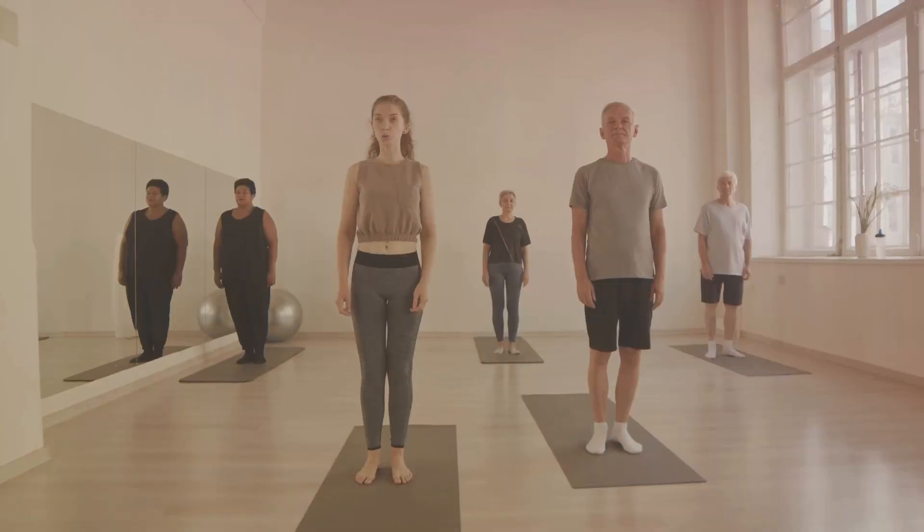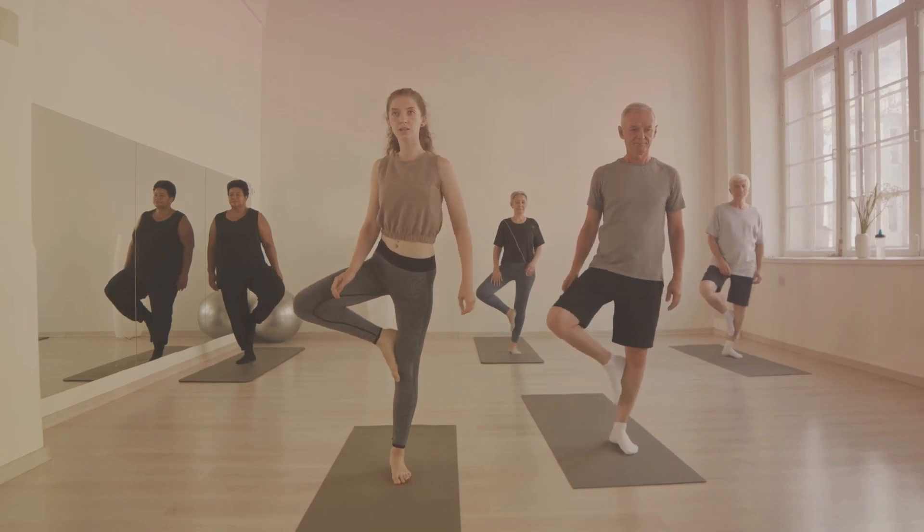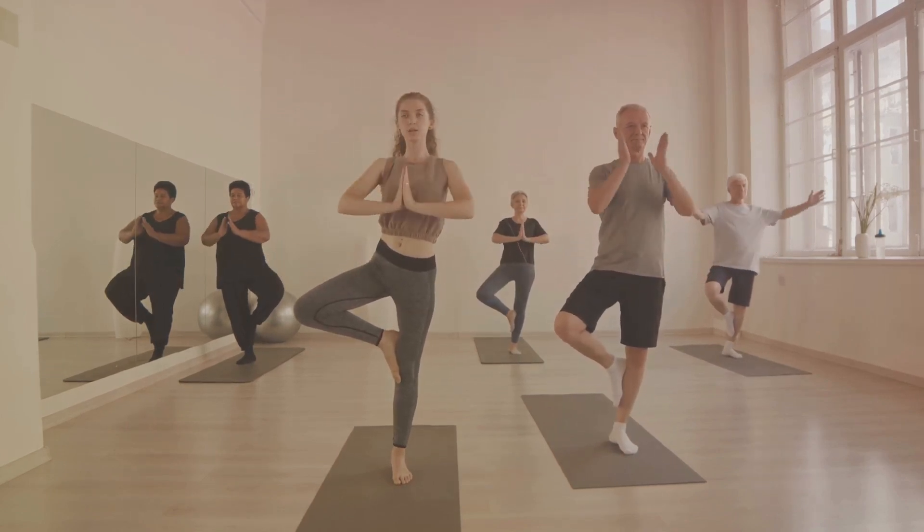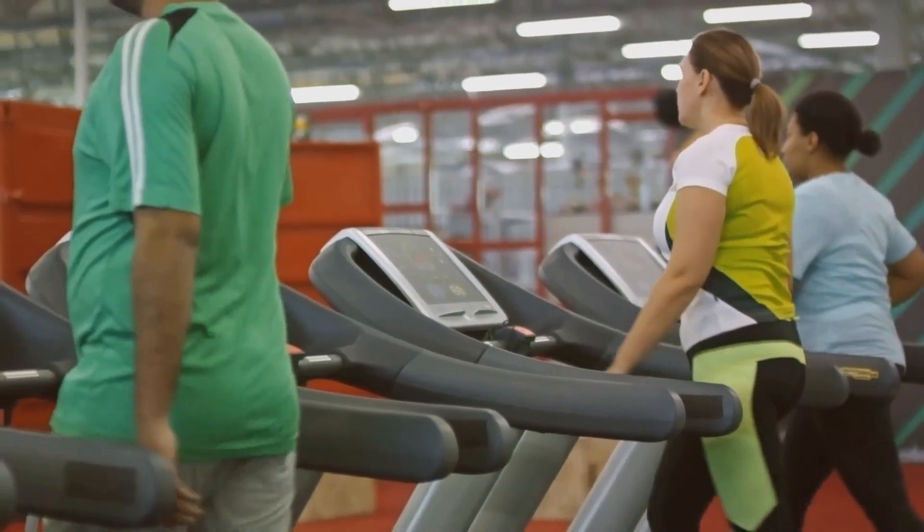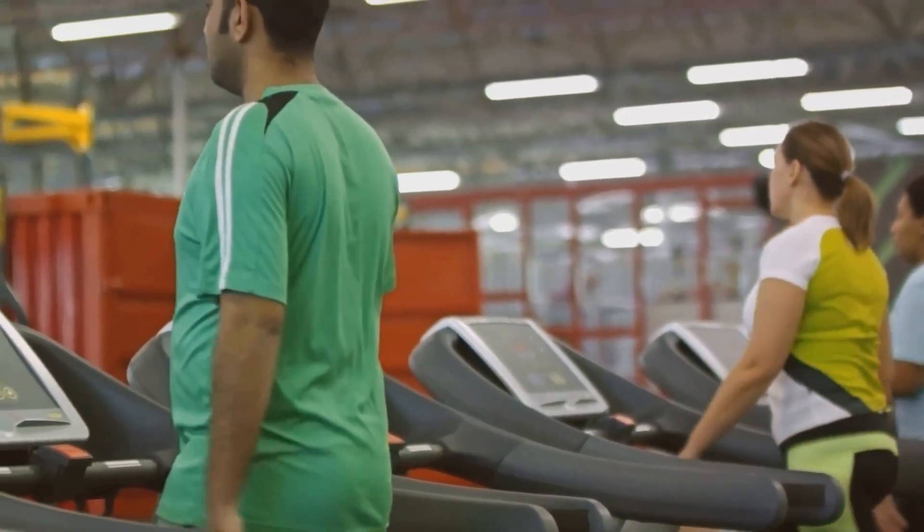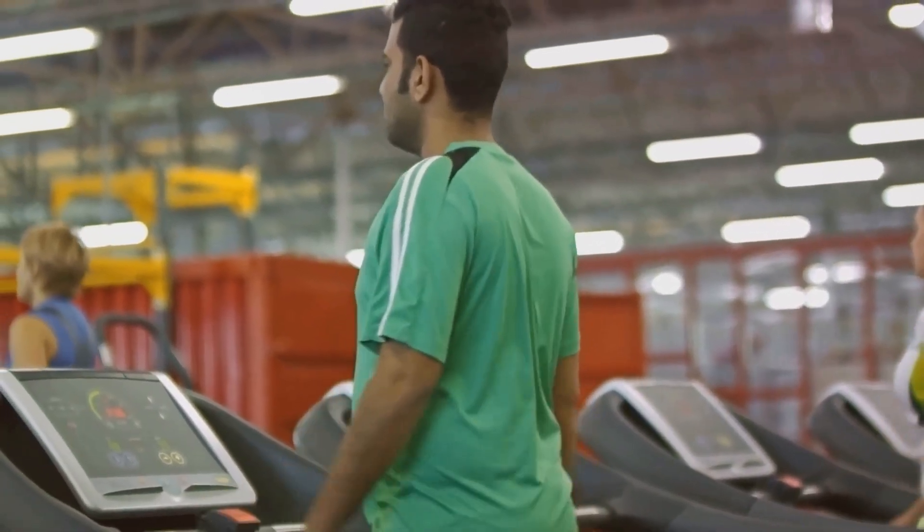Understanding the problem is the first step, but what can we do about it? Let's explore some solutions and strategies. First and foremost, regular physical activity is key. Exercise not only burns calories but also increases insulin sensitivity, which can help your body use insulin more efficiently. This in turn can help preserve the function of your pancreatic beta cells.